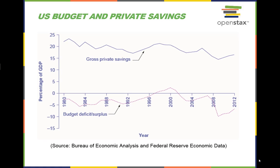The theory of Ricardian equivalence suggests that any increase in government borrowing will be offset by additional private saving, while any decrease in government borrowing will be offset by reduced private saving. Sometimes this theory holds true, and sometimes it does not. One thing is certain: deficit spending causes a gap in financial capital needed for investment, which can be filled by domestic private investment or foreign investment.